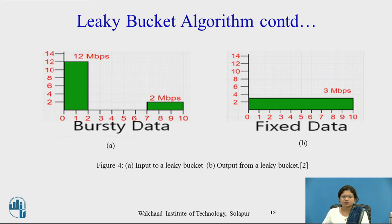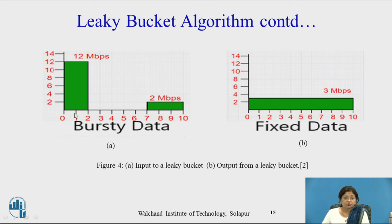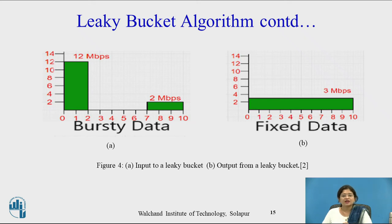Now look at these two diagrams. The first graph shows the input to the leaky bucket and the second shows the output from the leaky bucket. In the first graph, bursty data is shown: the host transmitted at 12 Mbps for 2 seconds, was then silent for 5 seconds, and then transmitted at 2 Mbps for the next 3 seconds — totaling 10 seconds of transmission. This is the unregulated flow input to the leaky bucket.